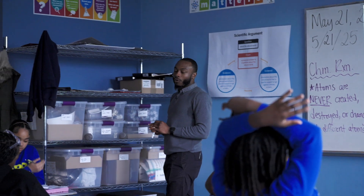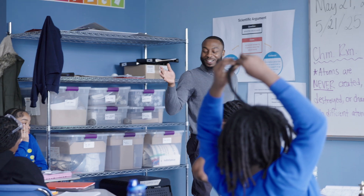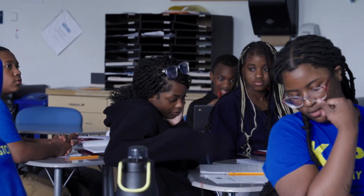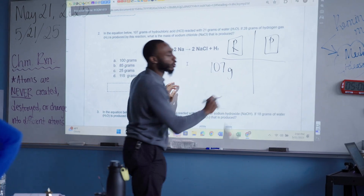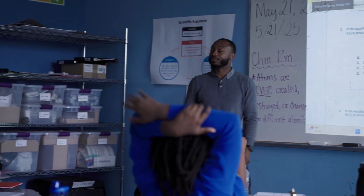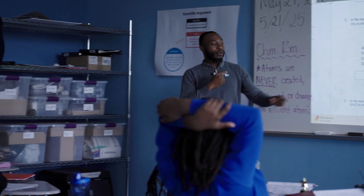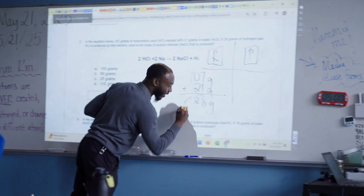All right, sixth grade — we're going to come back together and take a look. What is the total mass of the reactants here? Amira, what do you think? 107. 107 what, Amira? Grams. And now you add them together to get 128. So we have calculated the total mass of the reactants.